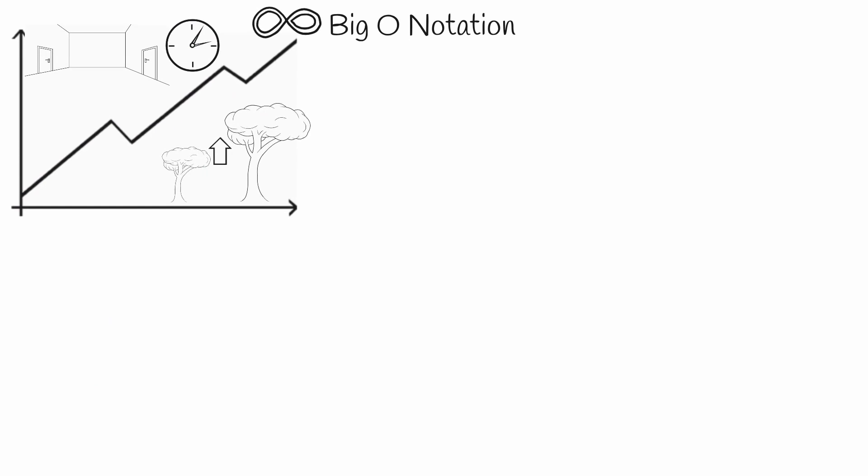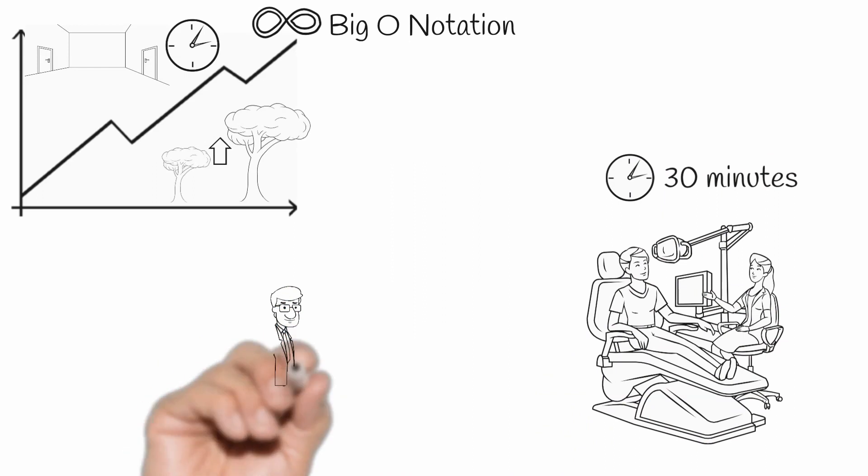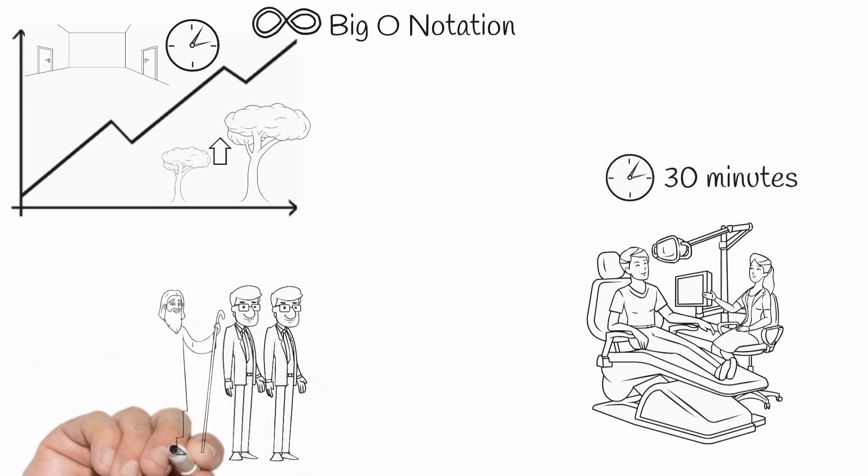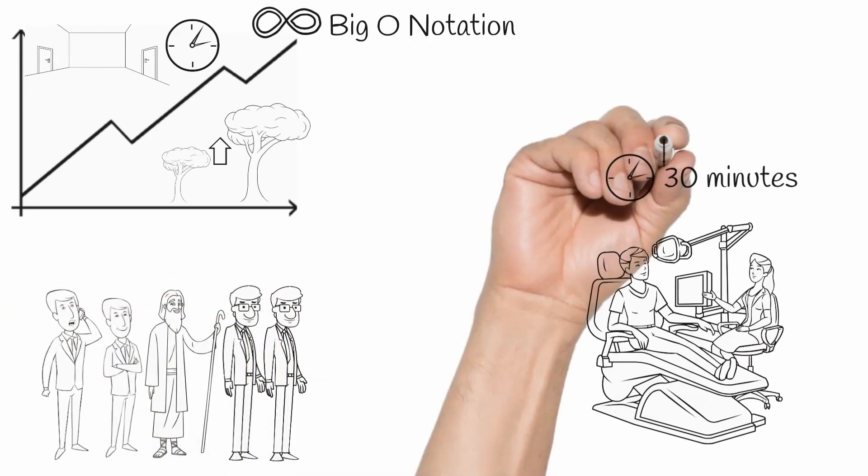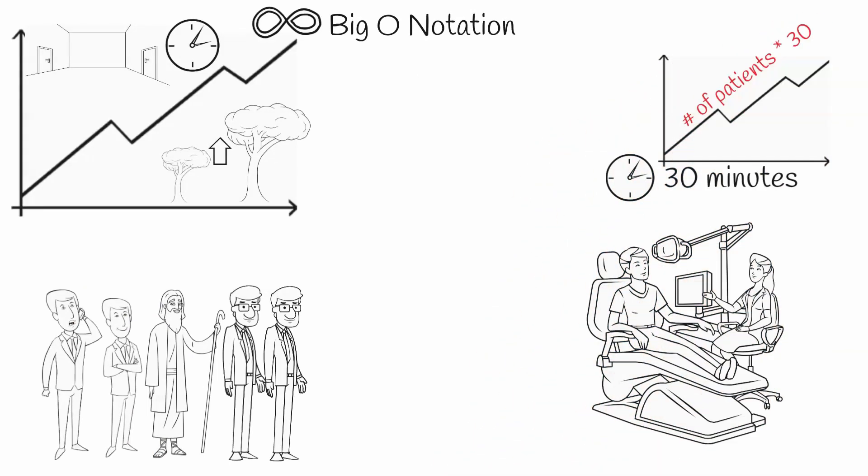For example, let's say that we have a dentist, and she takes 30 minutes to treat one patient. As her line of patients increases, the time that it takes for her to treat all of the patients will scale linearly with the number of patients waiting in line. This is because it always takes her a constant amount of time to treat each individual patient, which is 30 minutes.